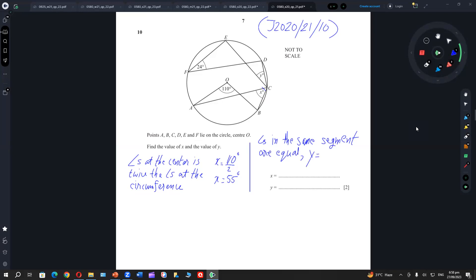Please write with me the property: angles in the same segment are equal. So Y is equal to 24. This is the circle property work. We will stop here and we will inshallah continue in our next class.